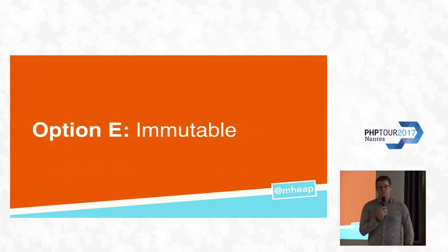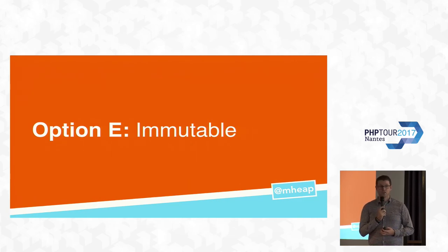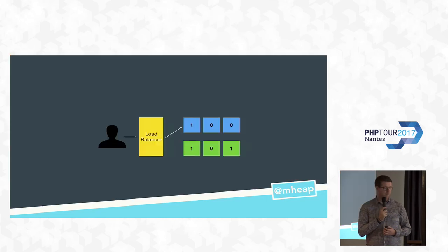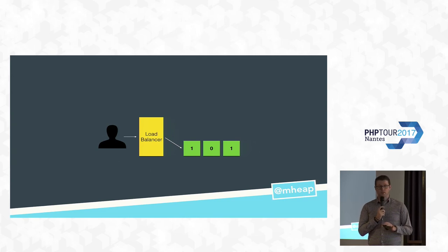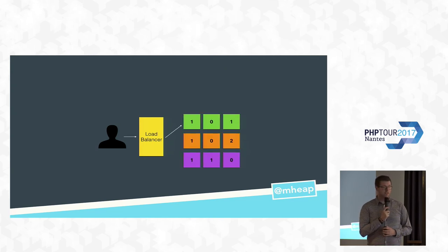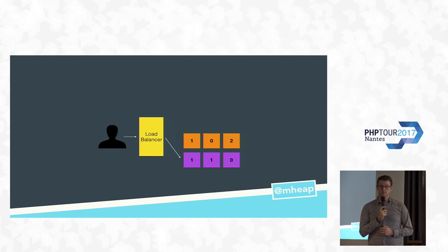Which brings us to our final option — immutable infrastructure. It's even bigger than blue-green, with one important change: once you build a server, you can never change it. The idea is the same: you're on blue, you do a release on green, you send traffic to green. But at this point, you delete your blue cluster — it's served its job. Because each new deploy has a new set of machines built and tested, we go from green to orange to purple, and green disappears. If we roll back, we go to orange.